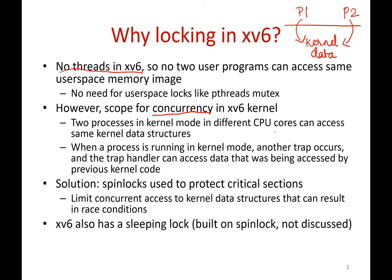Another situation can occur where a process P1 has gone into kernel mode to handle a trap, and then another interrupt has occurred. While P1 is in kernel mode, another interrupt has occurred, and now this interrupt handler can also access the same data that the process in kernel mode was accessing earlier. So because of this also, you can have unwanted concurrent access to shared data.